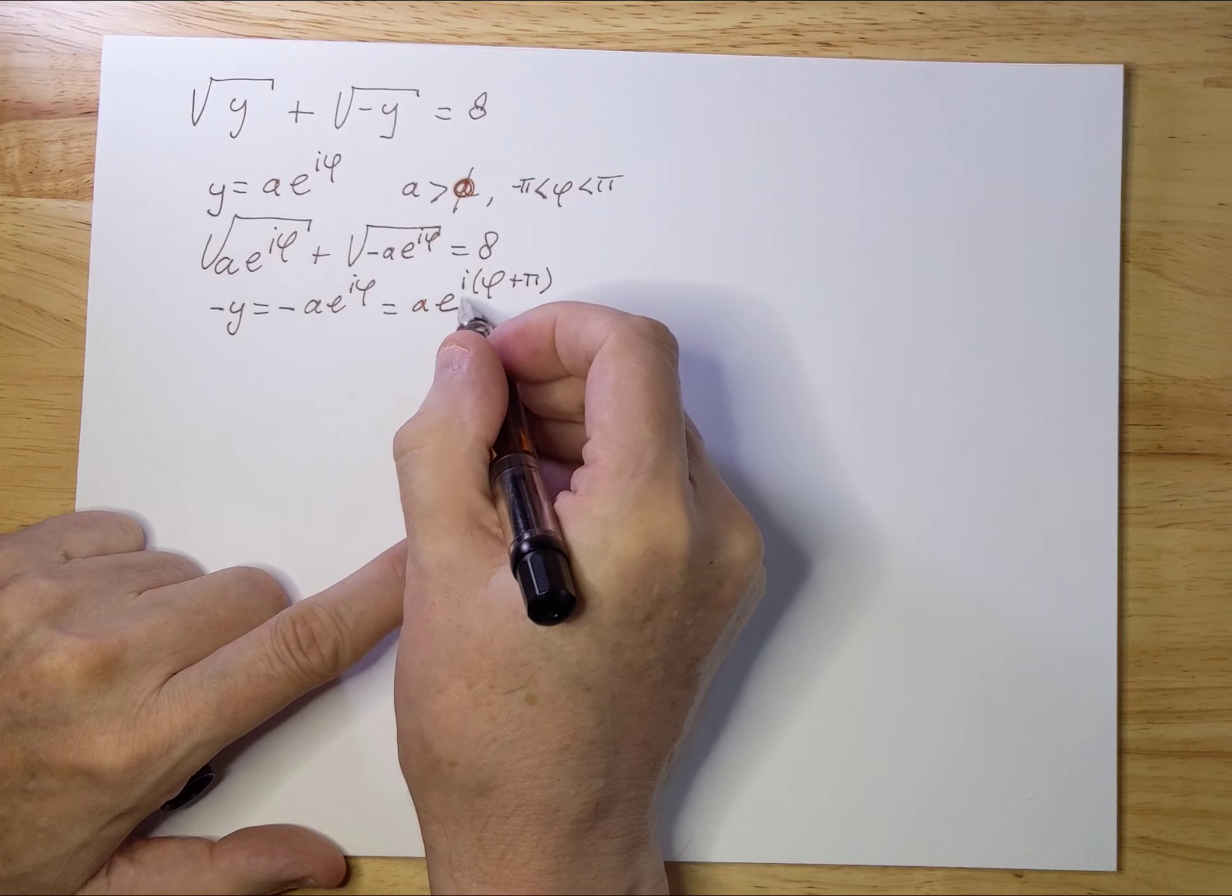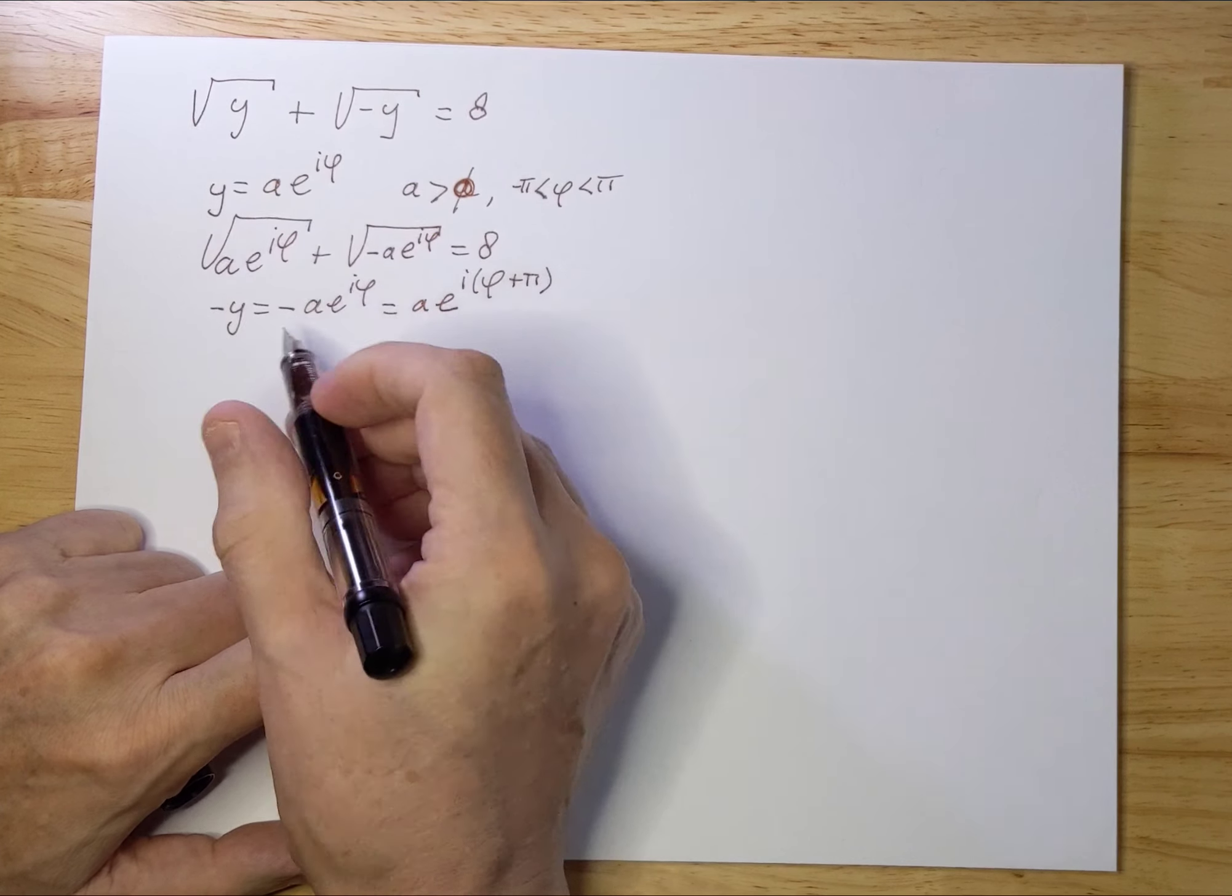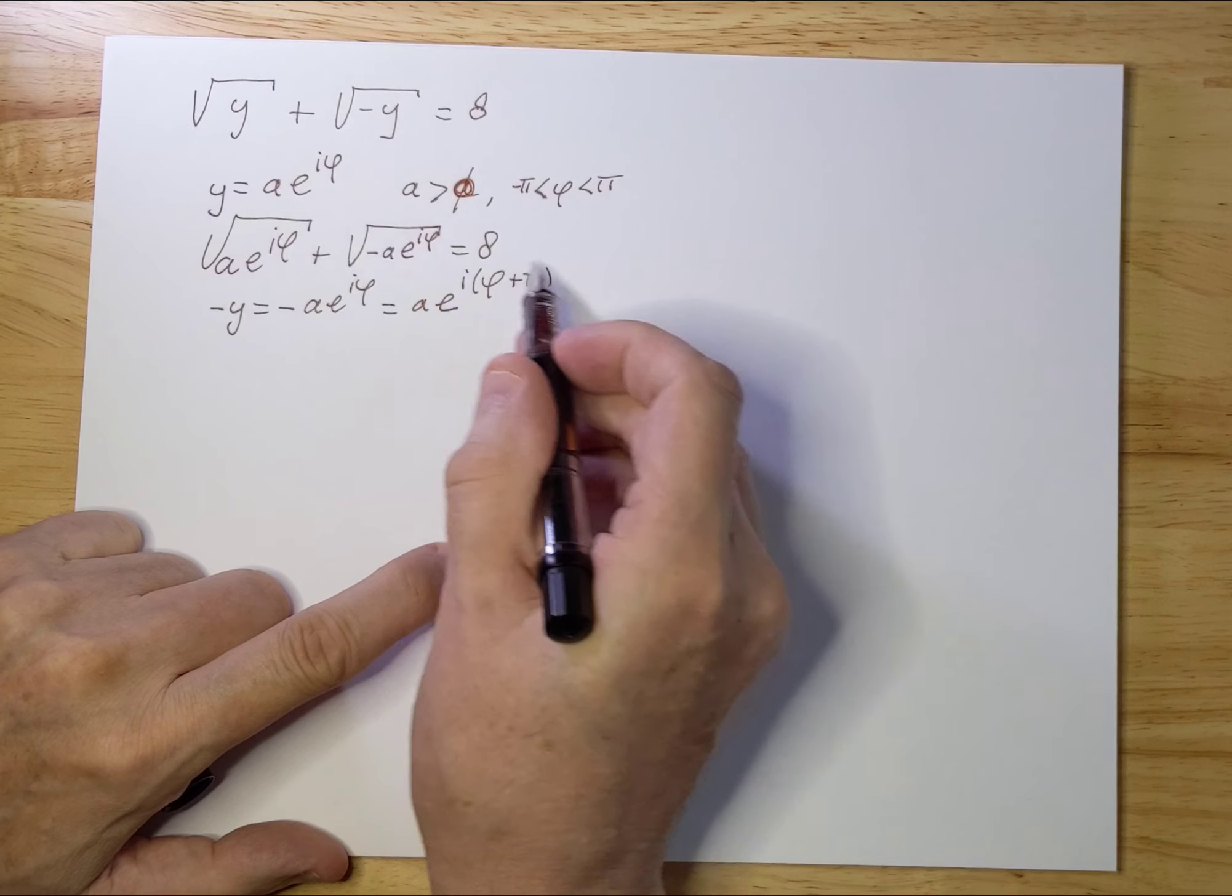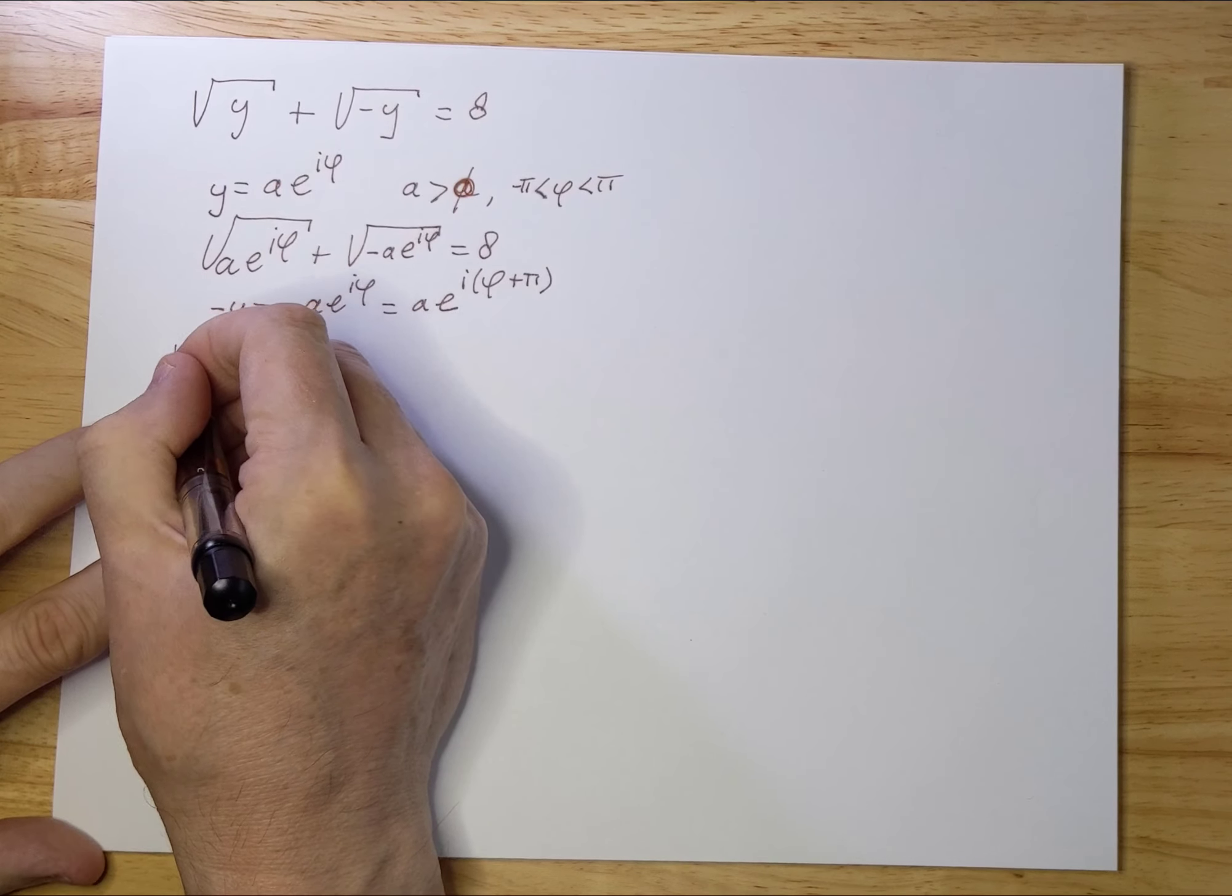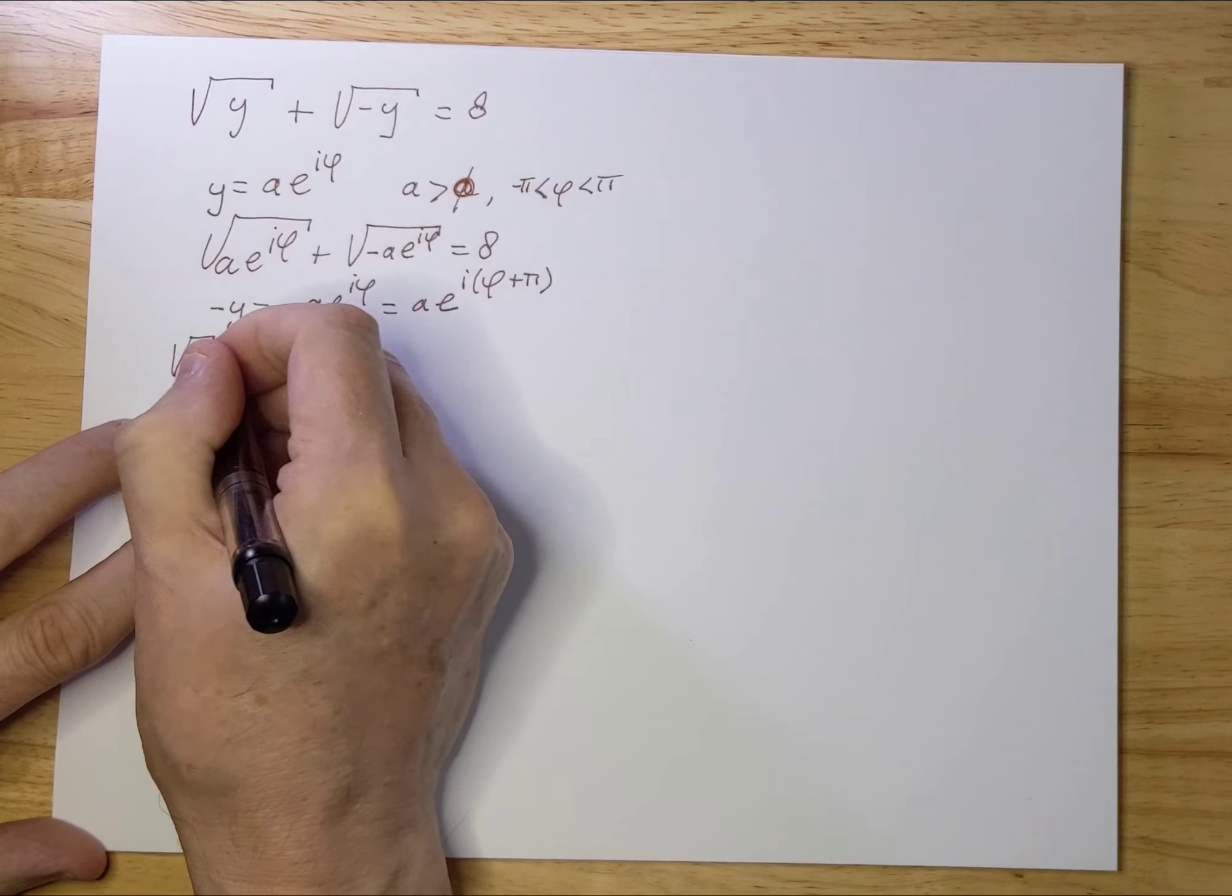So I rewrote -y into this form. Let's fill this out again. We can already take out √a and rewrite this as e^(i(φ/2)).